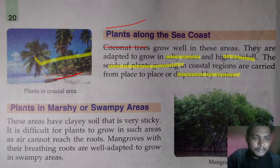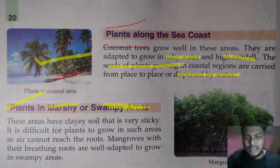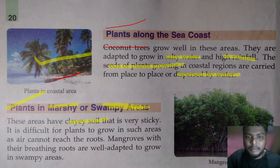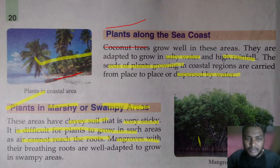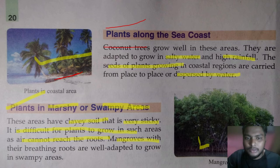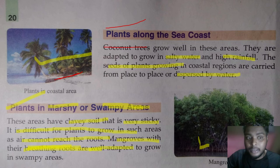Some plants grow in marshy or swampy areas — areas that do not dry at any time of the year. These areas have clayey, very sticky soil that makes it difficult for air to reach the roots, so the plant cannot get oxygen for root respiration. That is why mangroves have adapted by growing their roots outside to the surface to obtain oxygen. These breathing roots are well developed and well adapted to life in swampy areas.